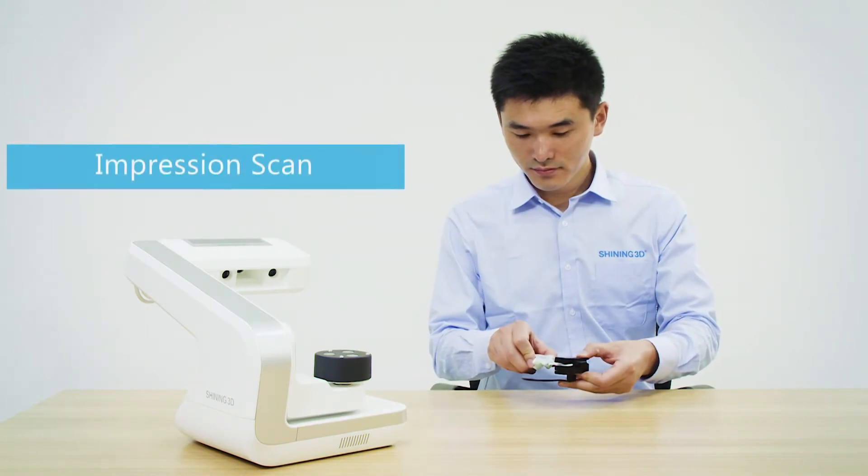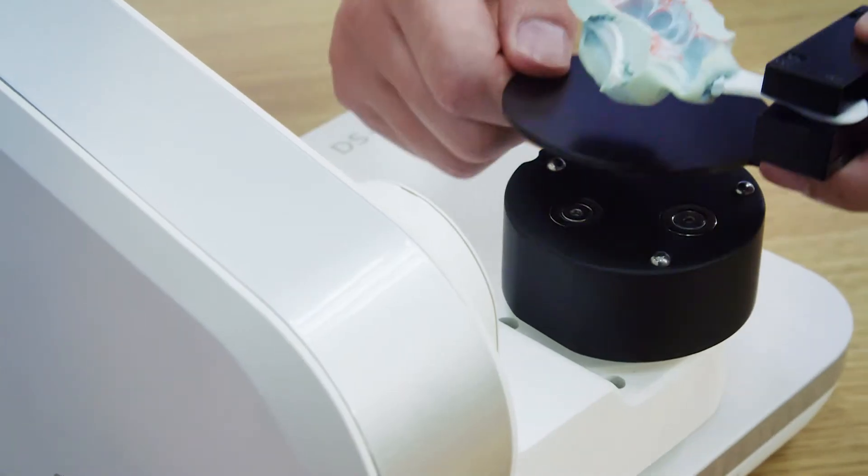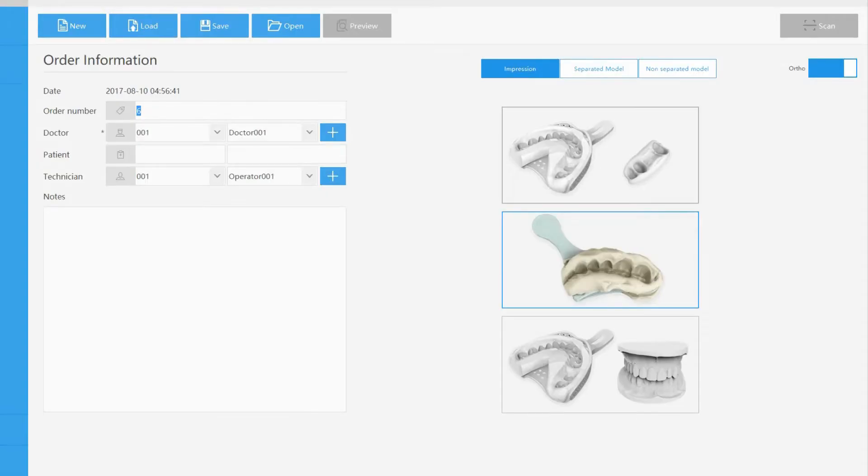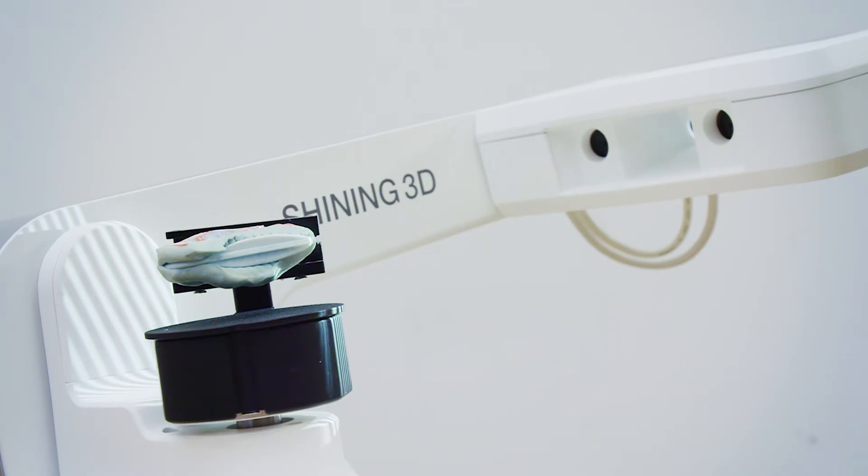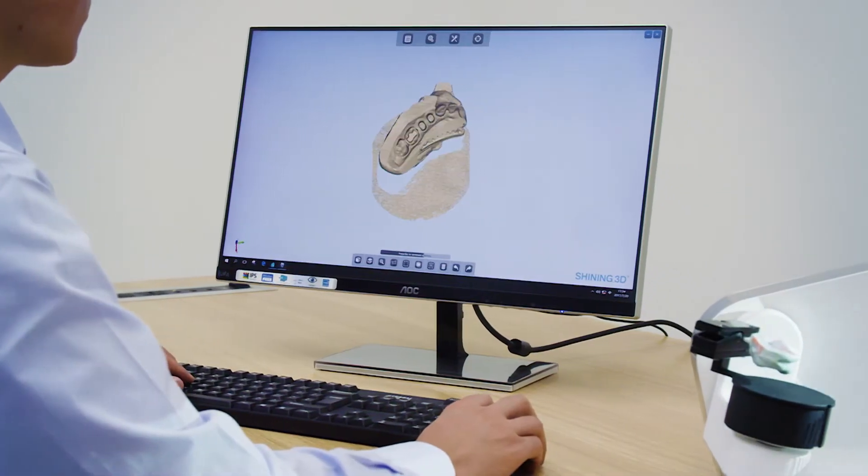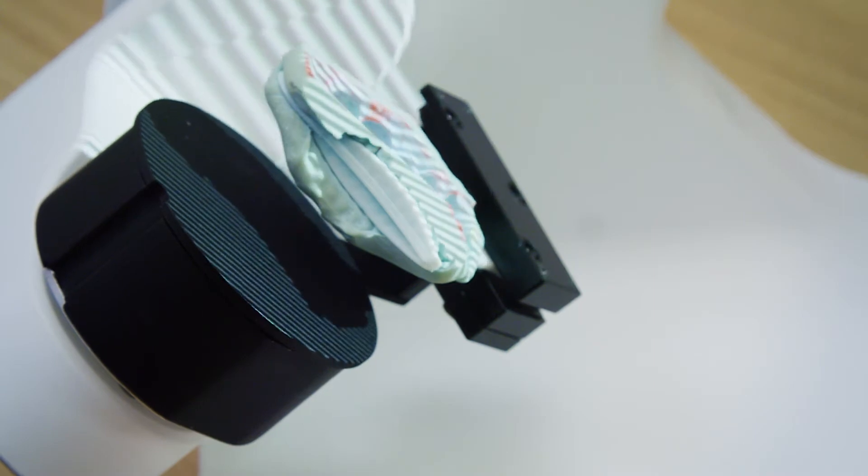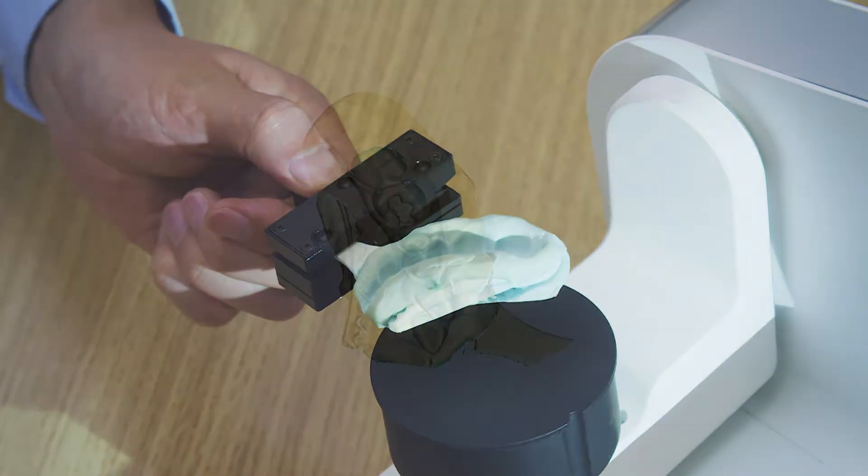Autoscan DS-EX provides multiple impression scan modes to meet your various requirements. Different from Shining 3D's original series of dental scanners, Autoscan DS-EX adopts an innovative algorithm and customized scan module to achieve better impression scan results.